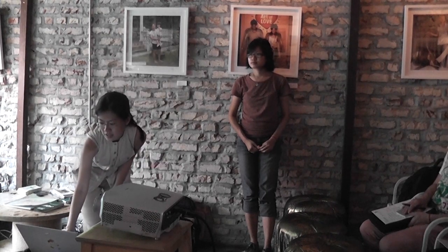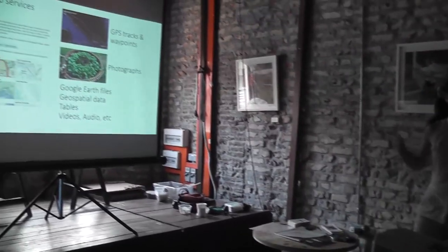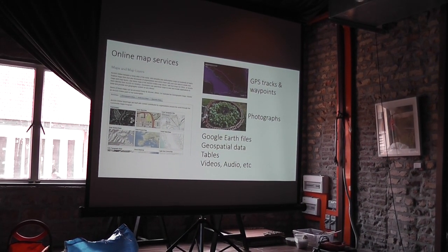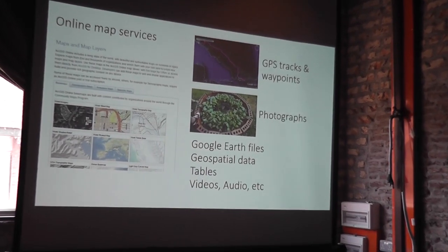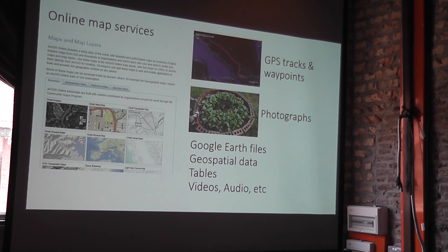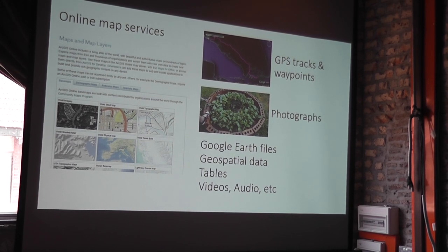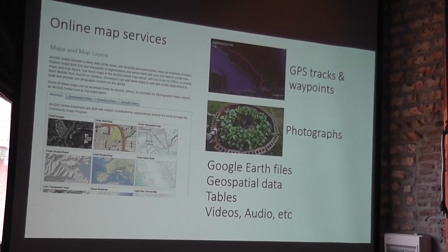Now I'll go through very quickly about what information you can put into the map, and after that we'll go on to how you create one. Things you can put into a map are really everyday things: photographs, GPS tracks — if someone had saved their GPS route here, that's something you can put on the map. Also Google Earth files, tables, videos, audio. There are things available online already, so basically all of this can go on a map.